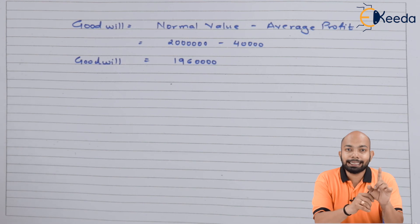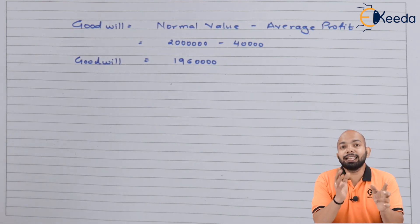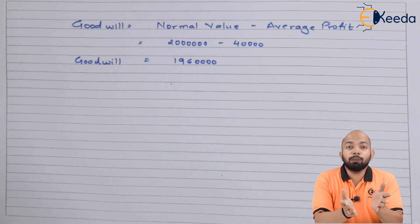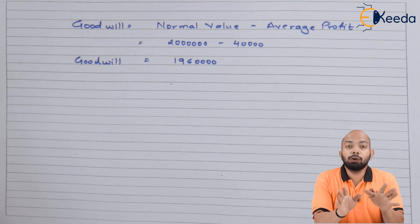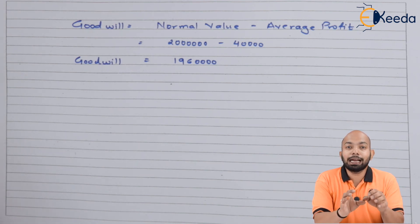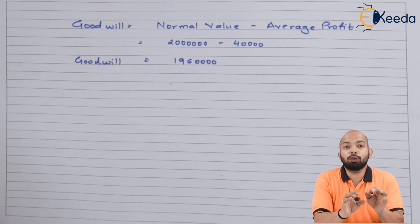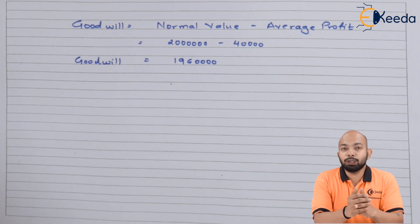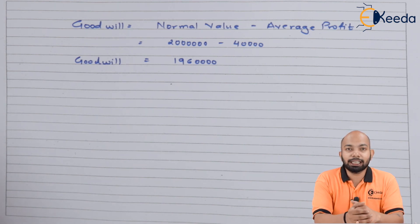In summary, the calculation under the capitalization method involves only two parts: Part A (normal value of business = capital employed ÷ normal rate of return) and Part B (average profit, which may or may not need to be calculated depending on the question). These are the only two components you need to worry about under the capitalization method. Thank you for watching — stay tuned with Ikeda and keep subscribing. See you in the next video.